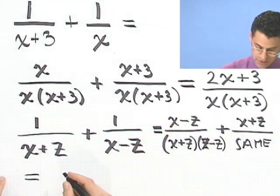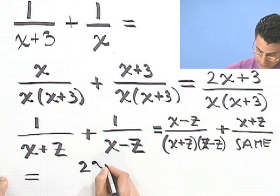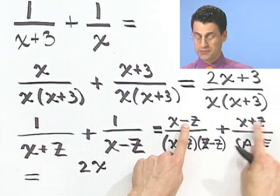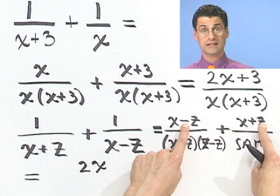x plus x is 2x, and I have a minus z plus z. Actually, they add to give 0. So in fact, I've got 0.